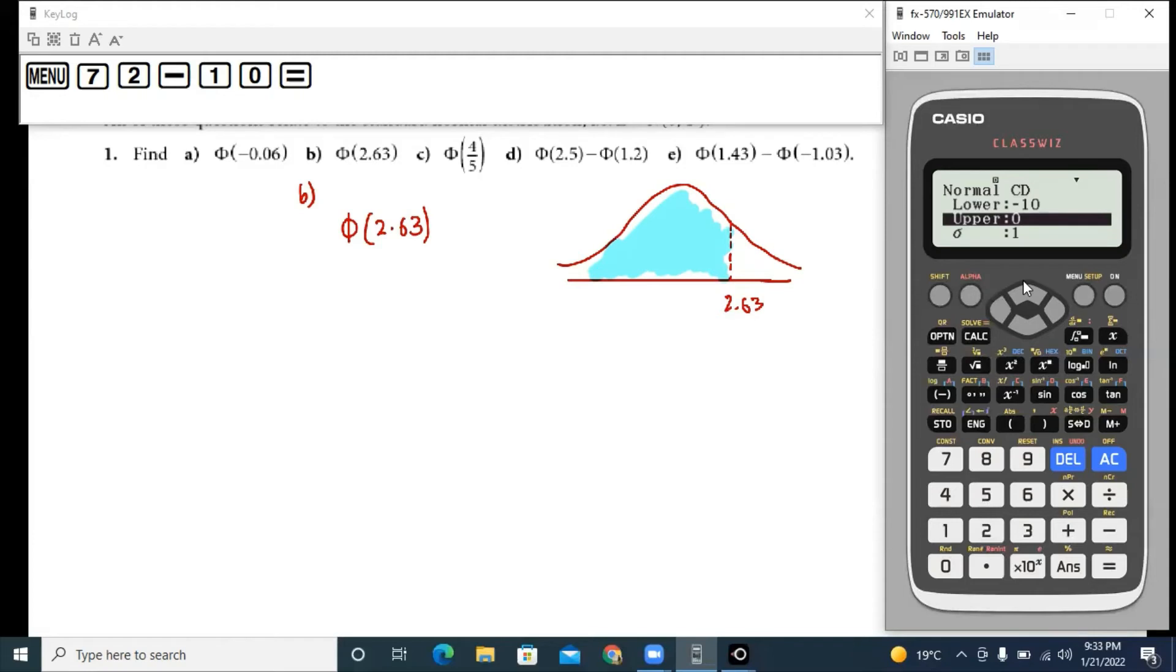Upper needs to be your value of z or the value of phi that you're trying to read.